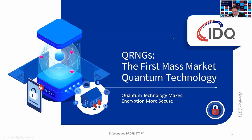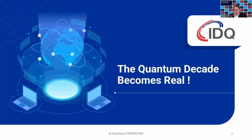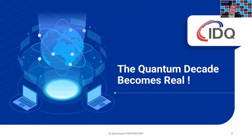Thank you and welcome everybody to IDQ's session on QRNGs and the mass market technology. We are already deep into the second year of the quantum decade. What I mean by that, at least from the QRNG point of view, is that the technology that can make someone's life better already exists — it is already available in a useful size, at a useful cost, and with a way to deploy it that anyone can get and use now.